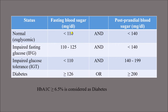When postprandial blood sugar (PPBS) is between 140 and 199 — less than 200 — but the fasting level is normal, it is considered impaired glucose tolerance. These cut-off values are very important to differentiate between normal blood sugar, diabetes, impaired fasting glucose, and impaired glucose tolerance. Also, if blood sugar levels may appear normal but HbA1c or glycated hemoglobin level is more than 6.5%, it is still considered a case of diabetes.